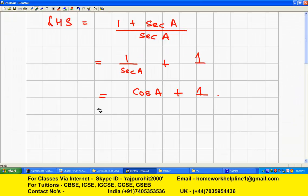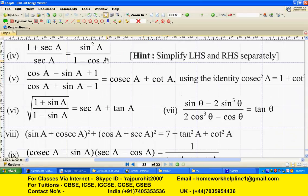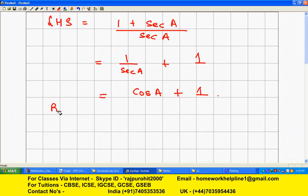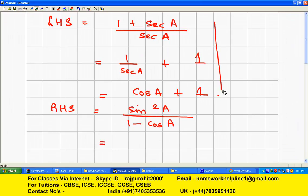Now I am going to take the term of RHS: sin²A / (1 - cos A). So our RHS is sin²A / (1 - cos A).